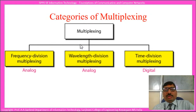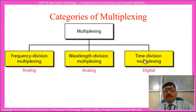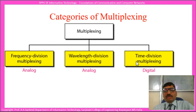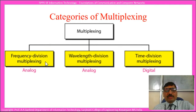As discussed in the beginning, there are three different categories of multiplexing. The first one is frequency division multiplexing, the second is wavelength division multiplexing, and the third is time division multiplexing. We shall see these three different types of multiplexing one after another. Let us first see frequency division multiplexing in this particular lecture.